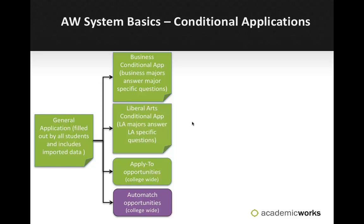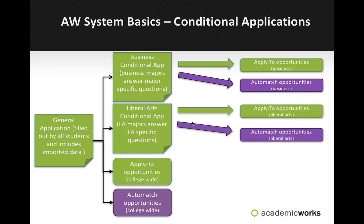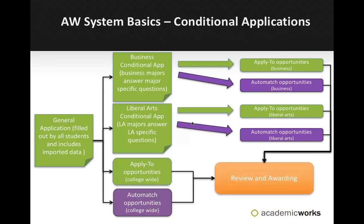Applicants that meet the qualifications for these conditional applications will be directed right to those conditional applications to complete. Once they submit the conditional applications, the system will then begin to automatically match or recommend apply-to opportunities associated with that particular conditional application. It is possible that some applicants may be directed to two different conditional applications — like if they have a double major. In that case, they just complete the second conditional, submit it, and the same process takes place. Once they have submitted all of their applications, it's time to begin the reviewing and awarding process.